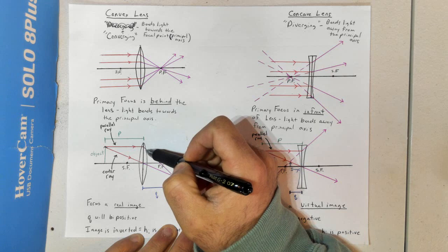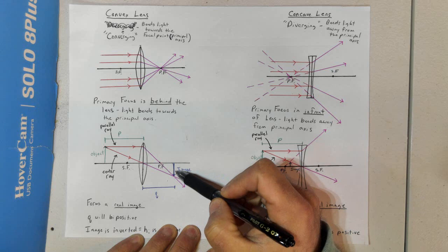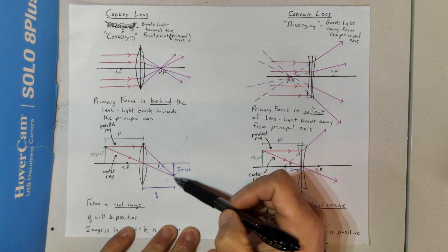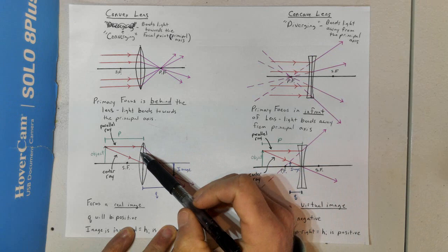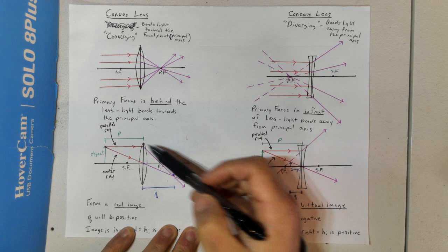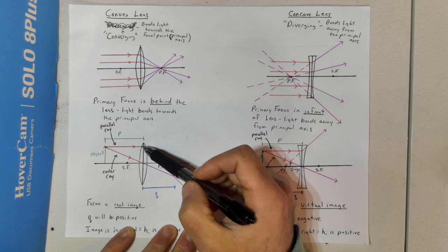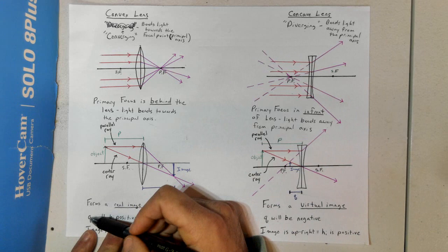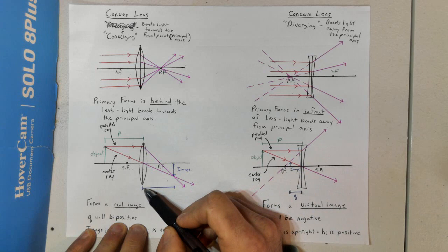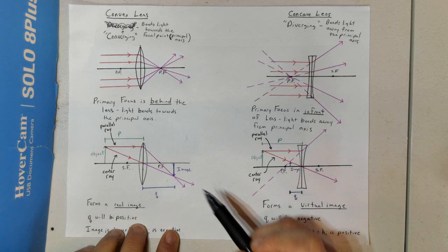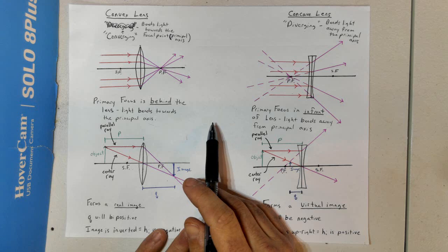Real light rays are passing through this lens and converging to form this image, so we know it's a real image. This differs from a mirror, because a real image for a mirror would be on the same side, whereas for a lens we expect light to pass through — so a real image is going to be behind the lens. Following the real light rays confirms it's real. Also, Q will be positive in this case, because the image is on the right side of the lens.